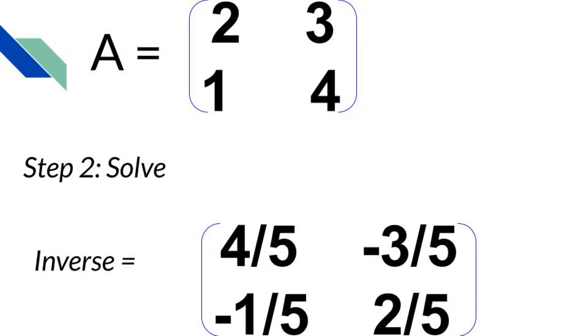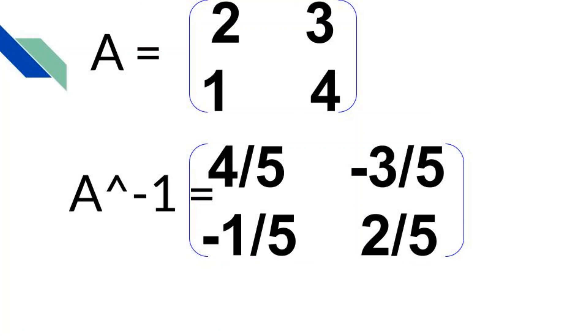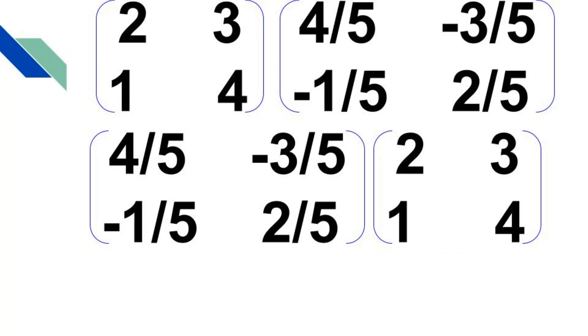We denote the inverse as A to the power of negative 1. Remember that the inverse means we can multiply the inverse by the original matrix in any order and get the identity matrix of size n. I feel my vitality levels rising. Till next time.